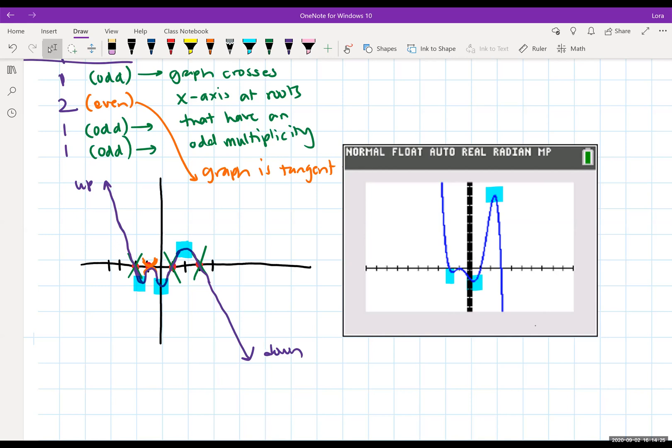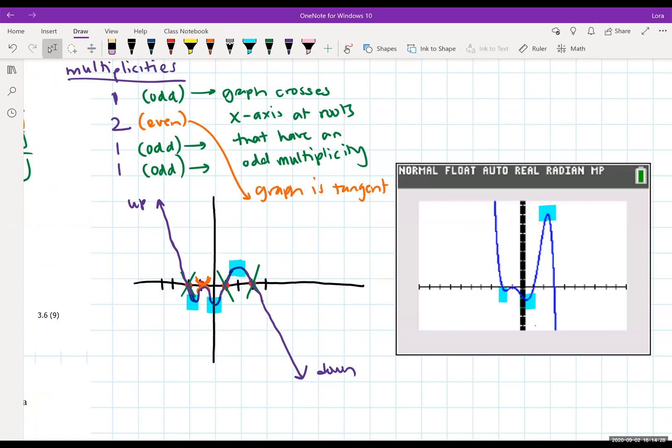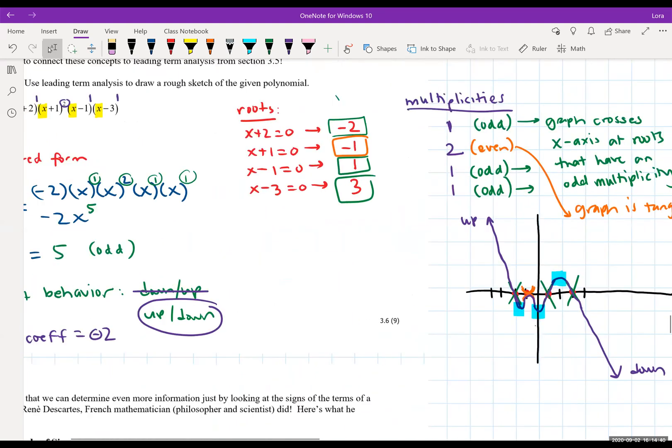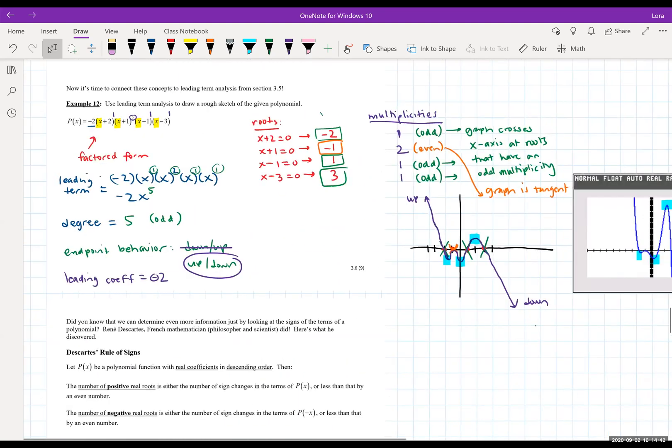Now I always encourage you, if you're doing these problems, you can use your TI to check. However, sometimes the degree is so high it ends up warping the view screen of your TI. So knowing these concepts and connecting 3.5 with 3.6 is definitely going to help you with a lot of these problems. I hope this helps. I'll see you for the next example.